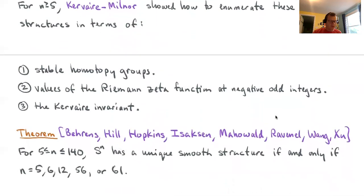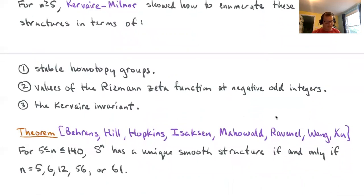If you put together various recent results of various people in various combinations—and I've listed the names of some of the people who have been involved in various parts: Behrens, Hill, Hopkins, myself, Mahowald, Ravenel, Wong, and Xu—then you get this classification of spheres with smooth structures. For n between 5 and 140, the only spheres that have unique smooth structures turn out to be 5, 6, 12, 56, and dimension 61. We don't entirely know what goes on beyond 140, although we do know some results. We kind of guess that maybe this is the whole list of spheres with unique smooth structure, and there aren't any more examples, although we don't really know.